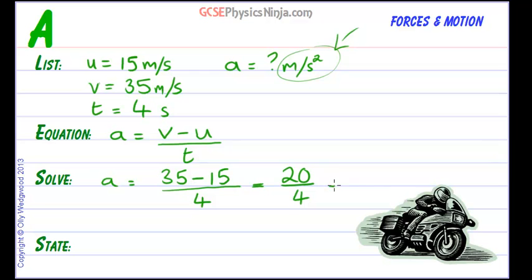20 divided by 4 is equal to 5, and state the answer: acceleration equals 5. And part of stating the answer is put the correct units, which we can get from the list, meters per second squared.